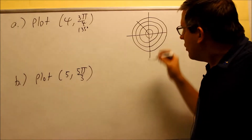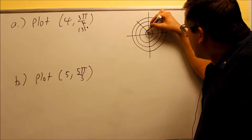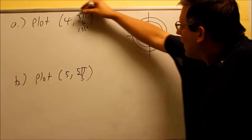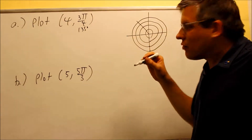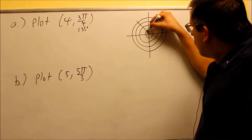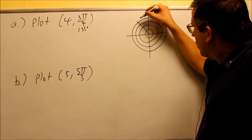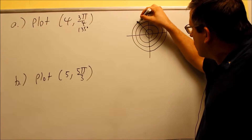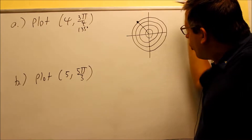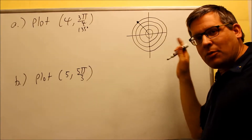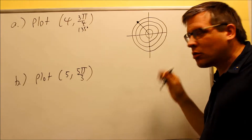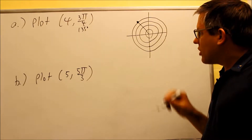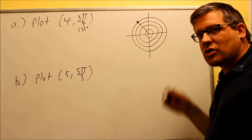Then what you do is you just count the rings — whatever the radius is. The radius is four, so I count one, two, three, four rings, and my point would be plotted right there. So if I had polar graphing paper or grid paper, this is exactly where it would be.